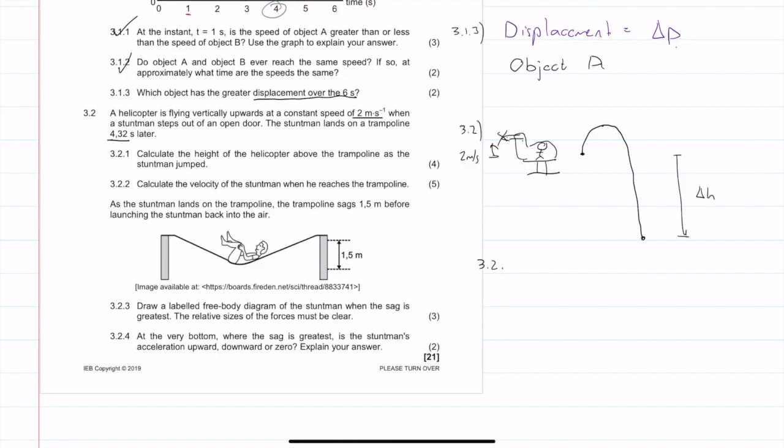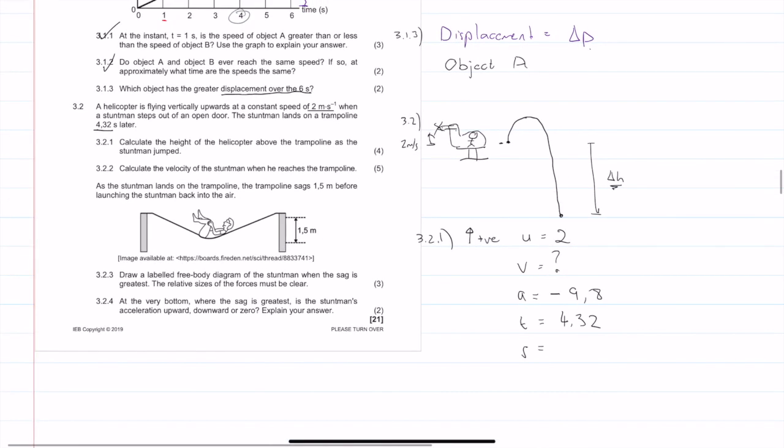Question 3.2.1 says, calculate the height of the helicopter above the trampoline as the stuntman jumped. So we want to calculate this change in height, basically. This is a classic U-RATS question. I'm going to take the upwards direction as being positive, and let's write our U-RATS. I want to calculate the U-RATS all the way until he hits the ground. So at this initial point, he has a velocity of 2 meters per second upwards. The final velocity is an unknown. The acceleration is minus 9.8 because we took upwards as positive. The time is 4.32 seconds, and the displacement is what we want to calculate.